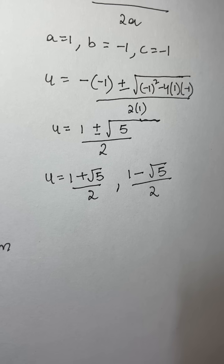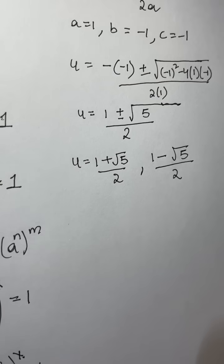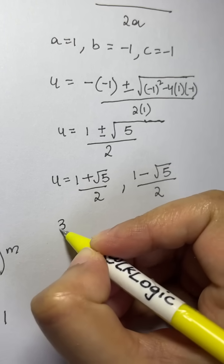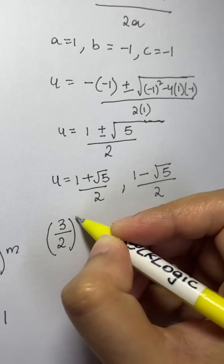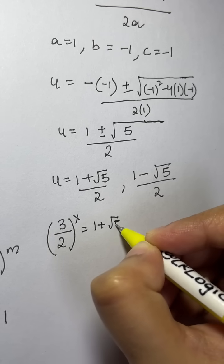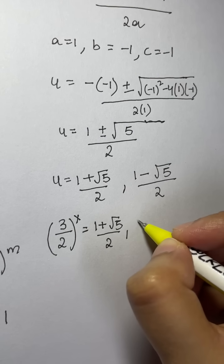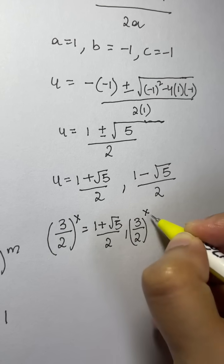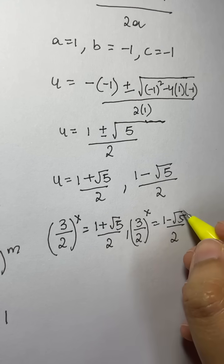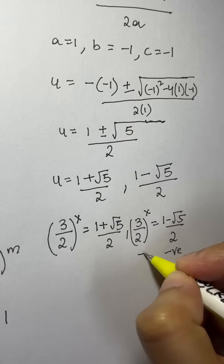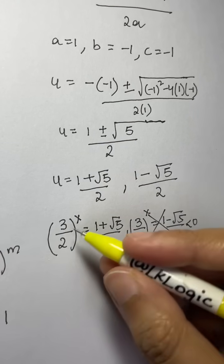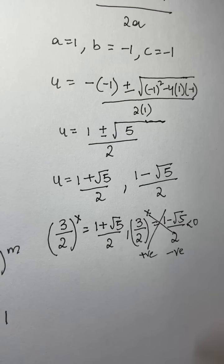Recall that u was (3/2) to the power of x. So (3/2)^x equals (1 plus square root of 5) over 2, or (3/2)^x equals (1 minus square root of 5) over 2. Since (1 minus square root of 5) over 2 is a negative value — less than zero — it cannot equal a positive exponential expression. We strike off that solution and proceed with the positive one.